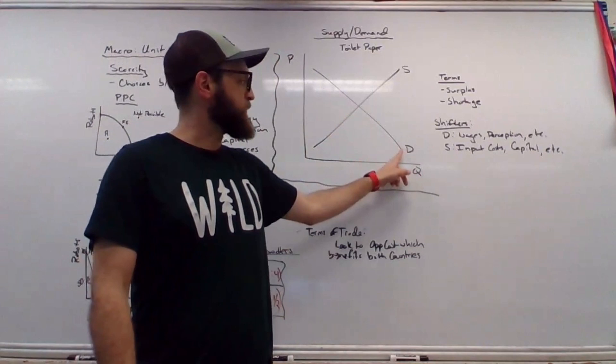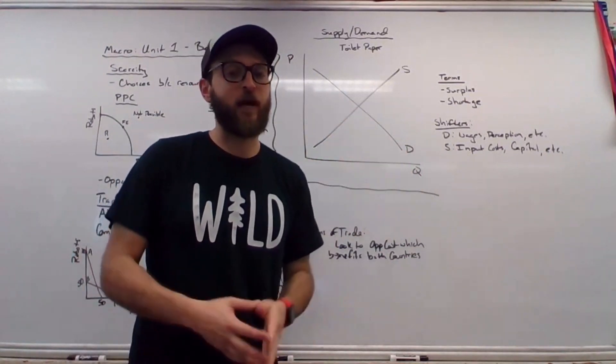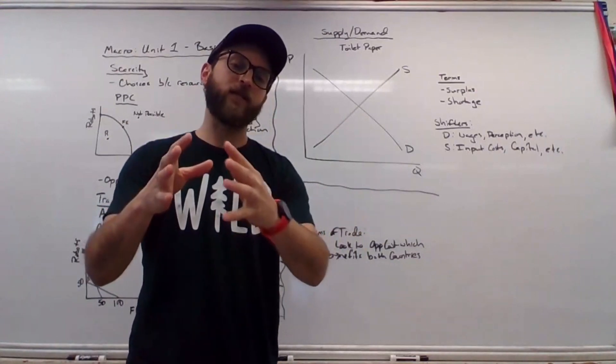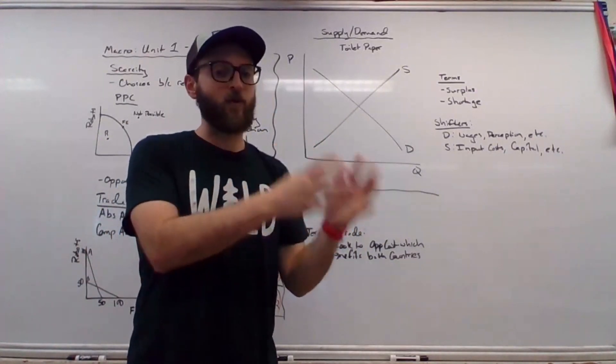So the number of people that demand low-price toilet paper is extremely high. The equilibrium point is this perfect nexus of people that want to sell an object at that price and people who want to buy it at that price.